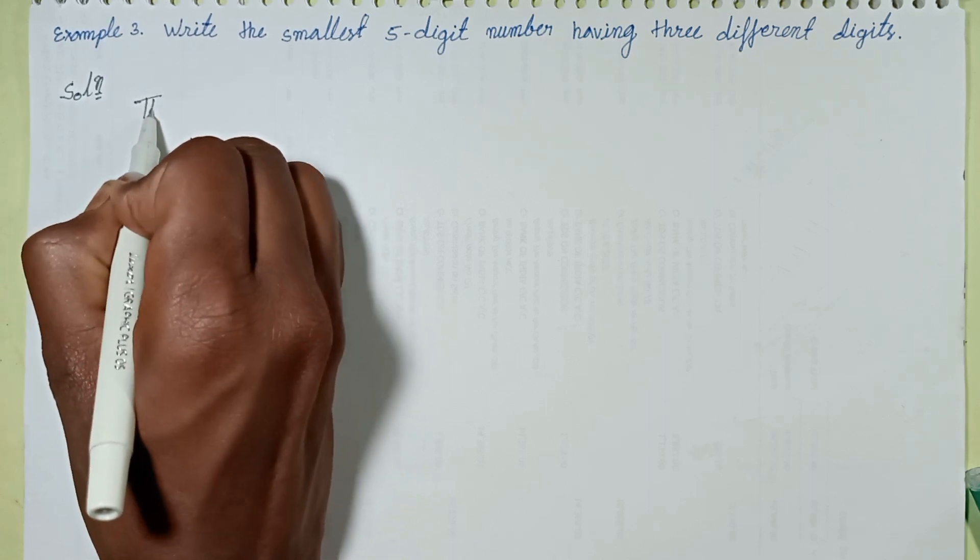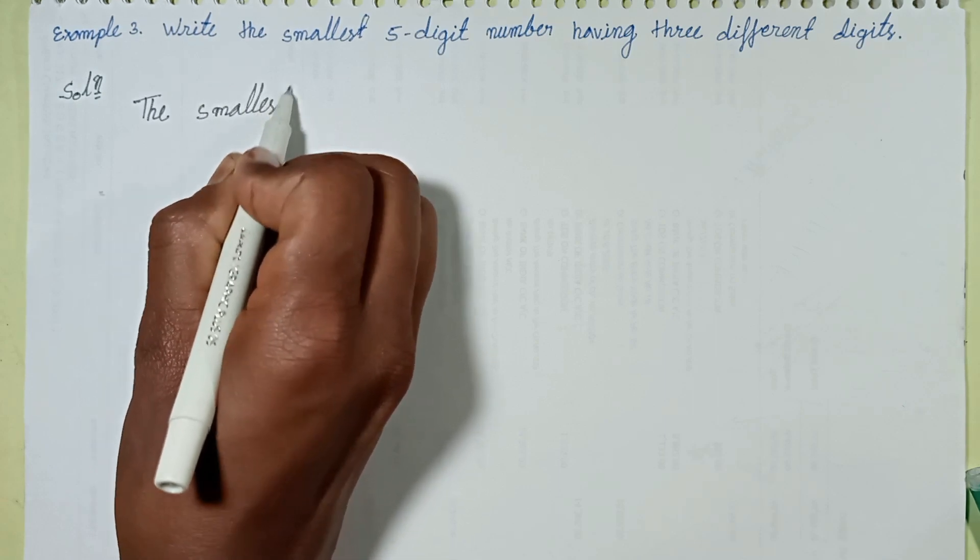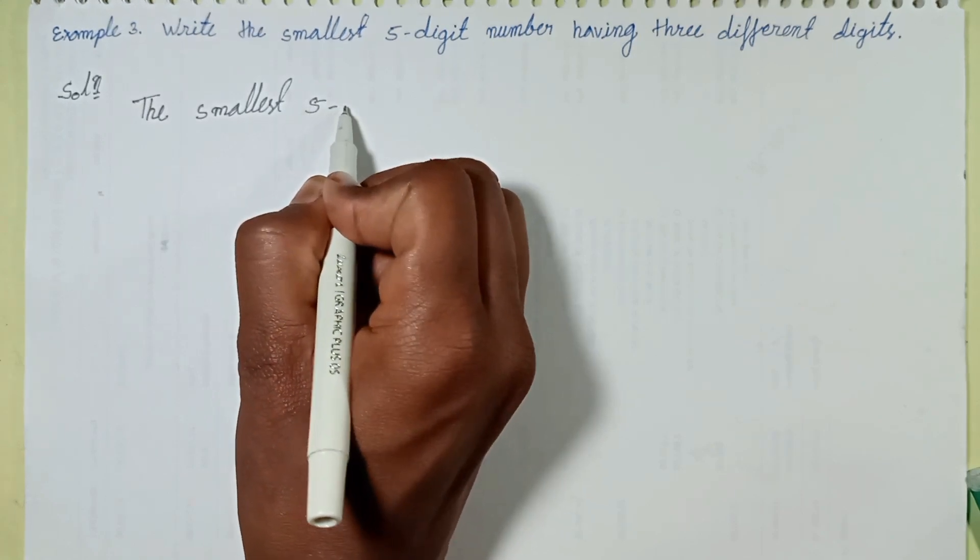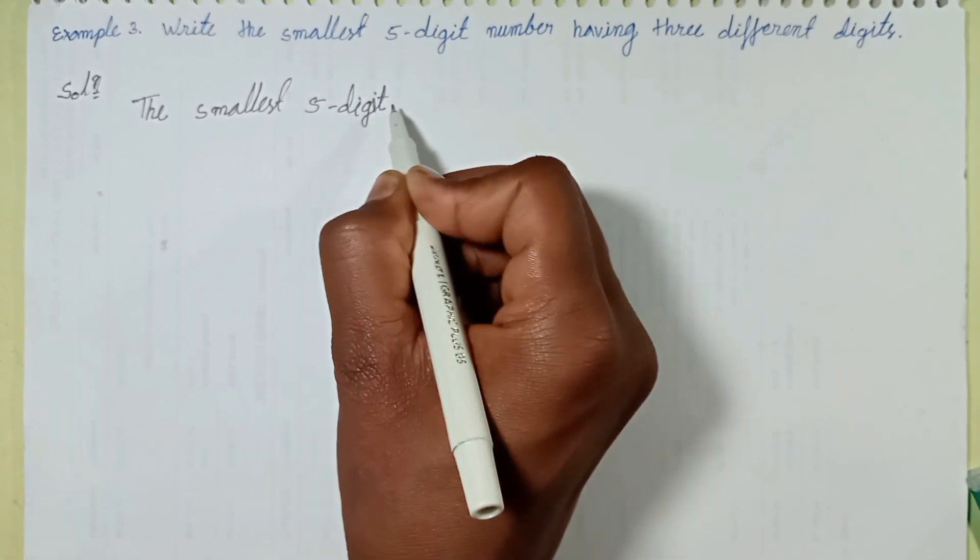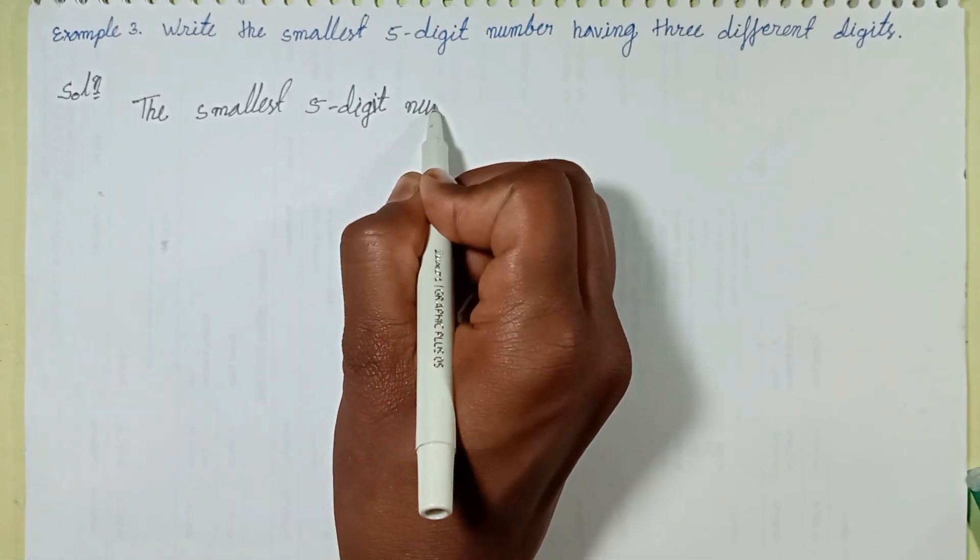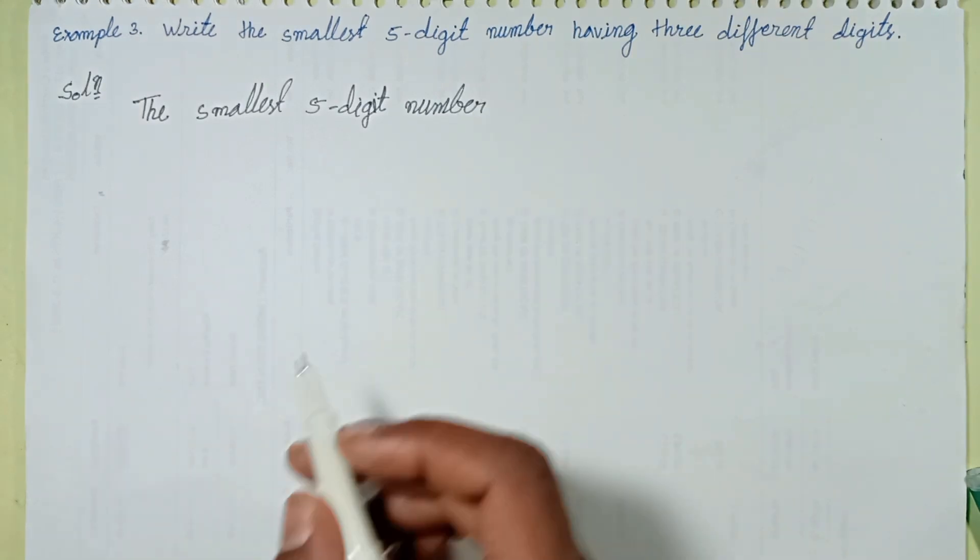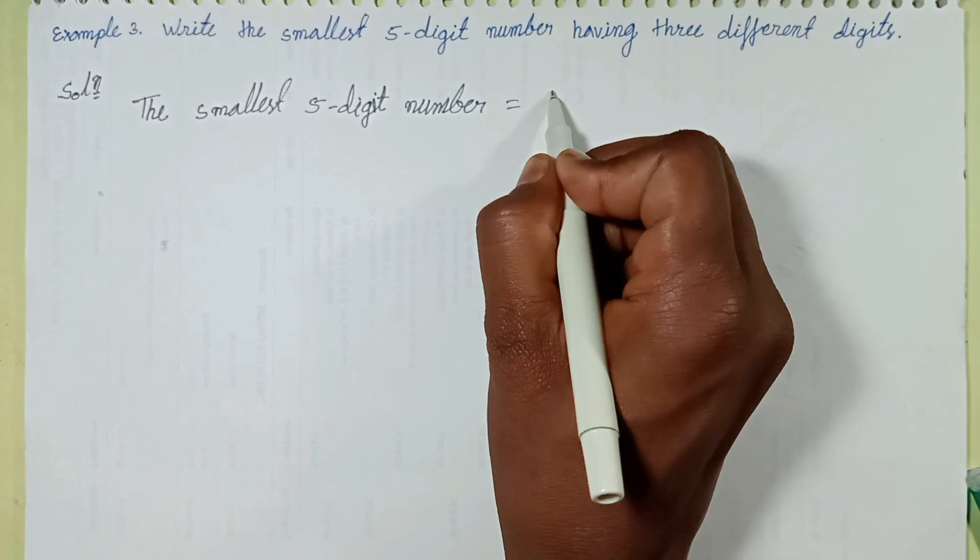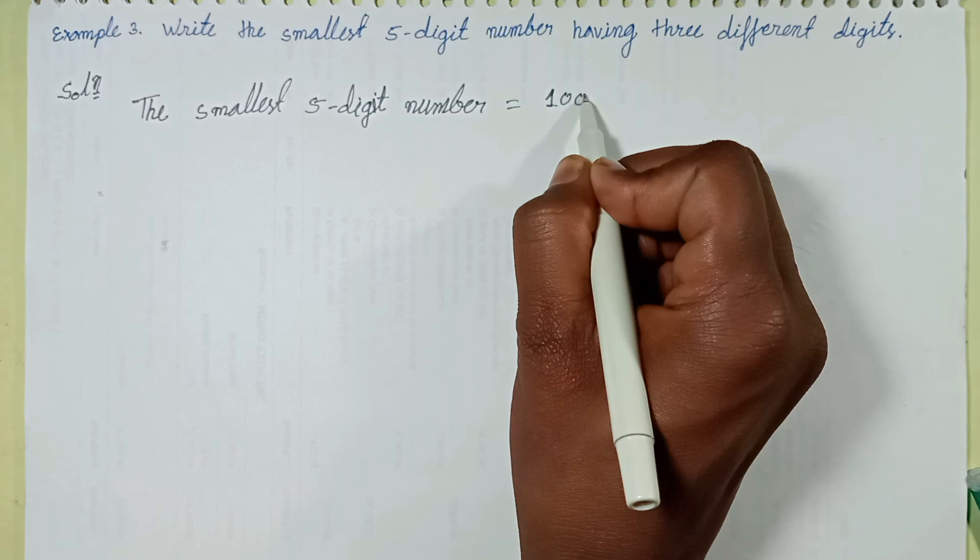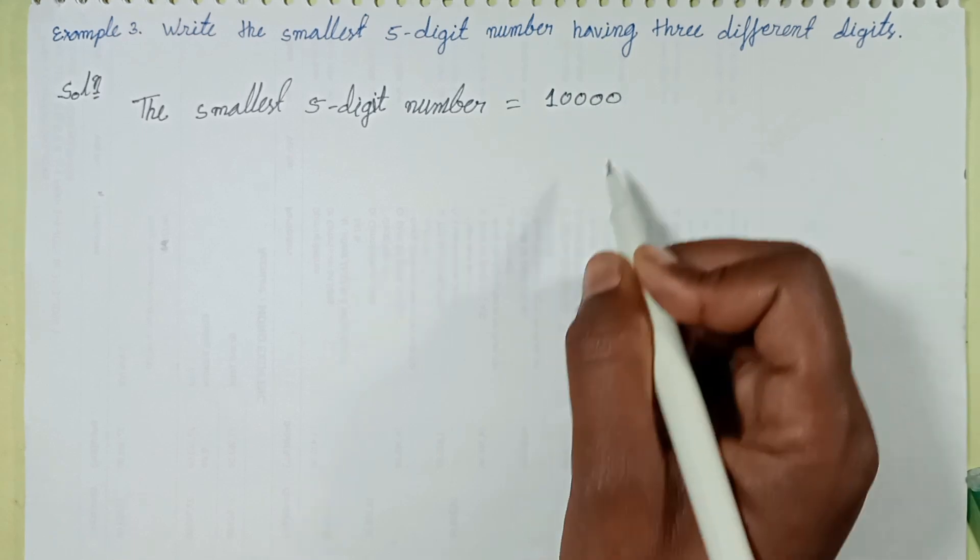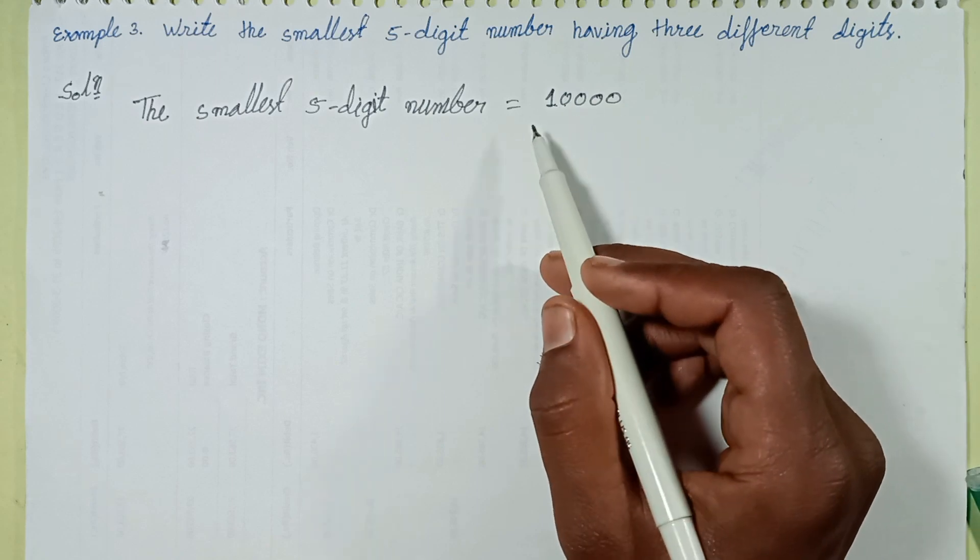The smallest five-digit number is 10000: one with four zeros - 1, 0, 0, 0, 0. That's five digits total: one, two, three, four, five.